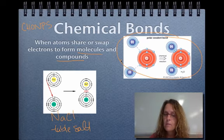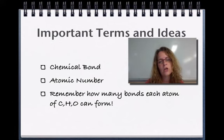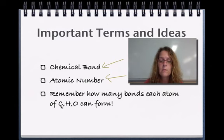And just to kind of wrap up, some important terms and ideas. You need to know what a chemical bond is. You need to know what an atomic number tells us, which is the number of protons and the number of electrons. And most of the time, those are the same. And also, you need to remember how many bonds each atom of carbon and hydrogen and oxygen can form.